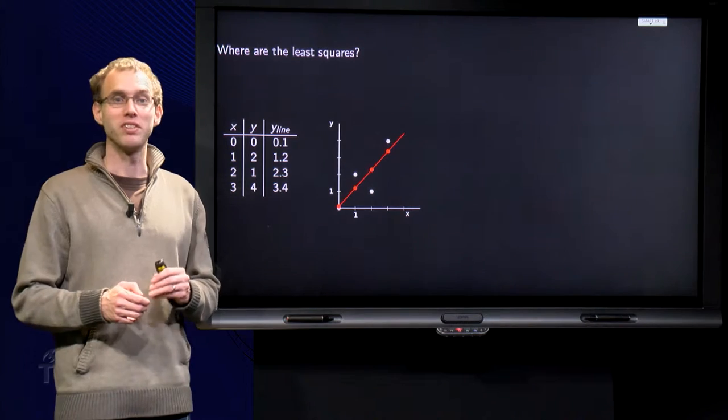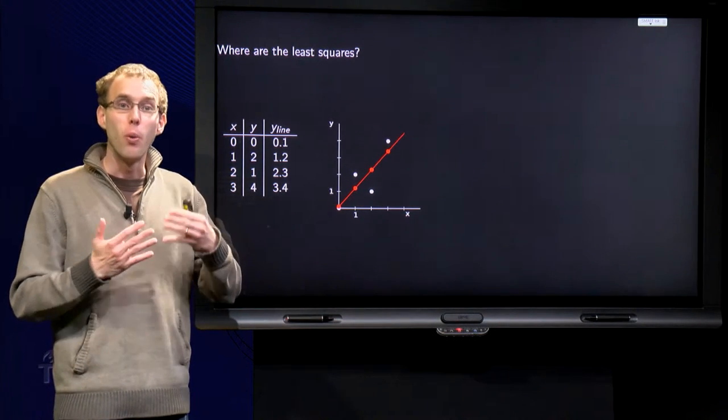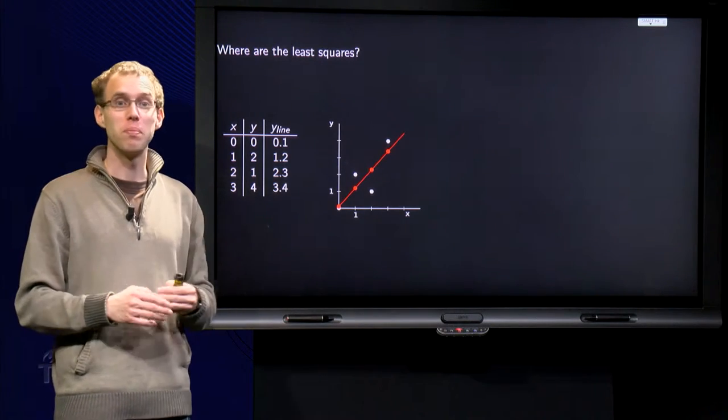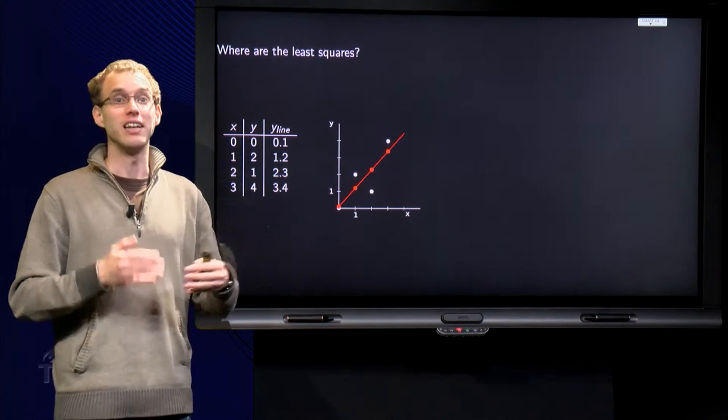Why is the method of the least squares called like that? So where are these least squares in the least squares method? And what does this mean for our line and our data points?